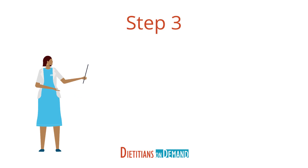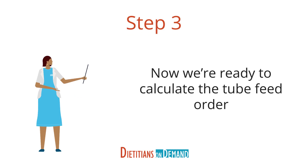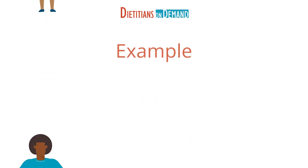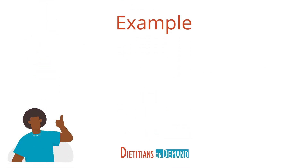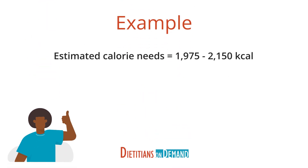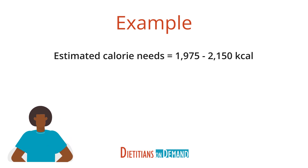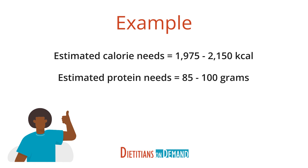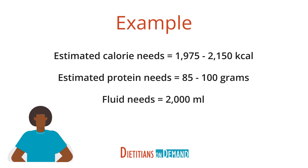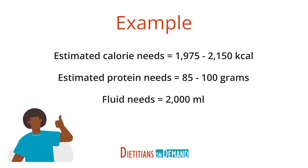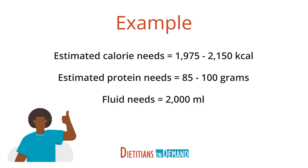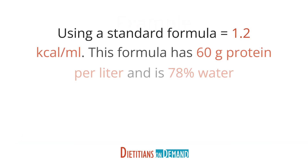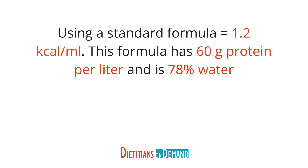Step 3: Now we're ready to calculate. Let's learn with an example. Our patient is ready to start tube feeding. His estimated calorie needs are 1,975 to 2,150 calories, and estimated protein needs are 85 to 100 grams. He needs about 2,000 milliliters of fluid per day. He doesn't have any unique medical concerns, so we're using a standard formula that is 1.2 calories per milliliter, has 60 grams of protein per liter, and is 78 percent water.